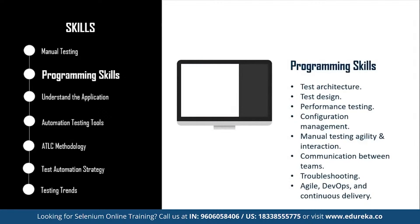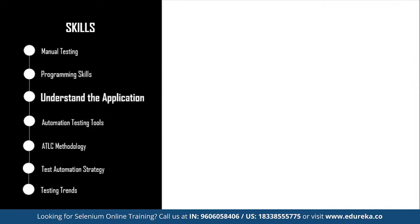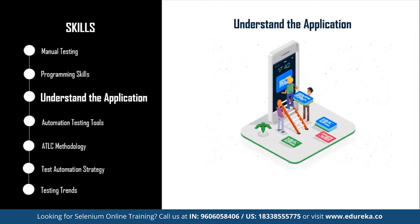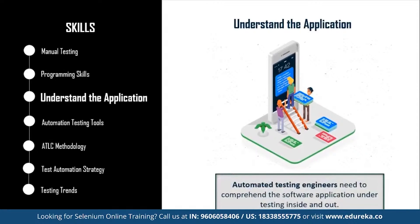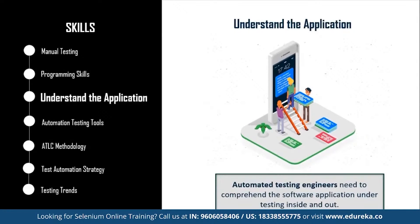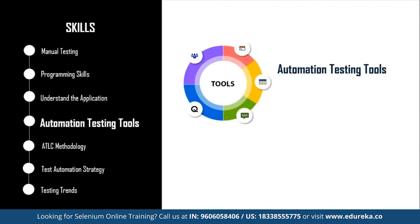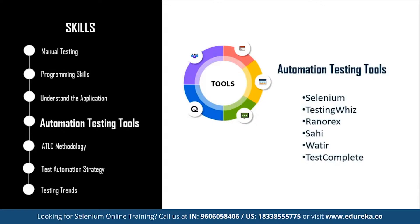The third step is to understand the application. Common details every automation tester needs to know include which programming languages were used to develop the application, what platform it is built on, which databases are involved, whether there are web services or APIs connected to different parts of the system, and many more such questions. These points may vary based on the complexity of the application, so make sure you are completely thorough with what you are going to test.